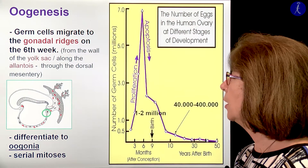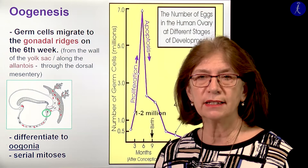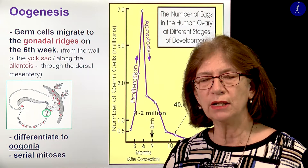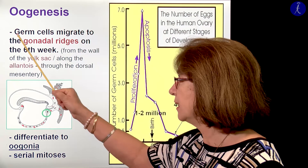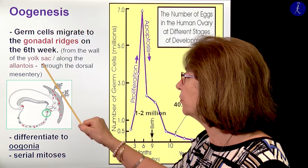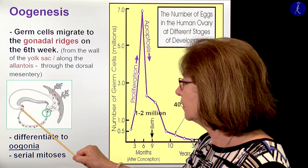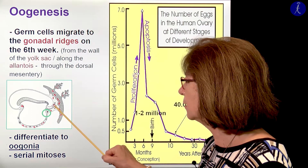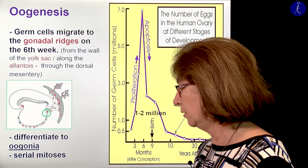Now, how does oogenesis happen? The germ cells migrate to the gonadal ridges on the sixth week, from the wall of the yolk sack along the allantois through the dorsal mesentery. Here you have these germ cells — this is the allantois — and these germ cells migrate to this territory of the body of the growing embryo on the sixth week.